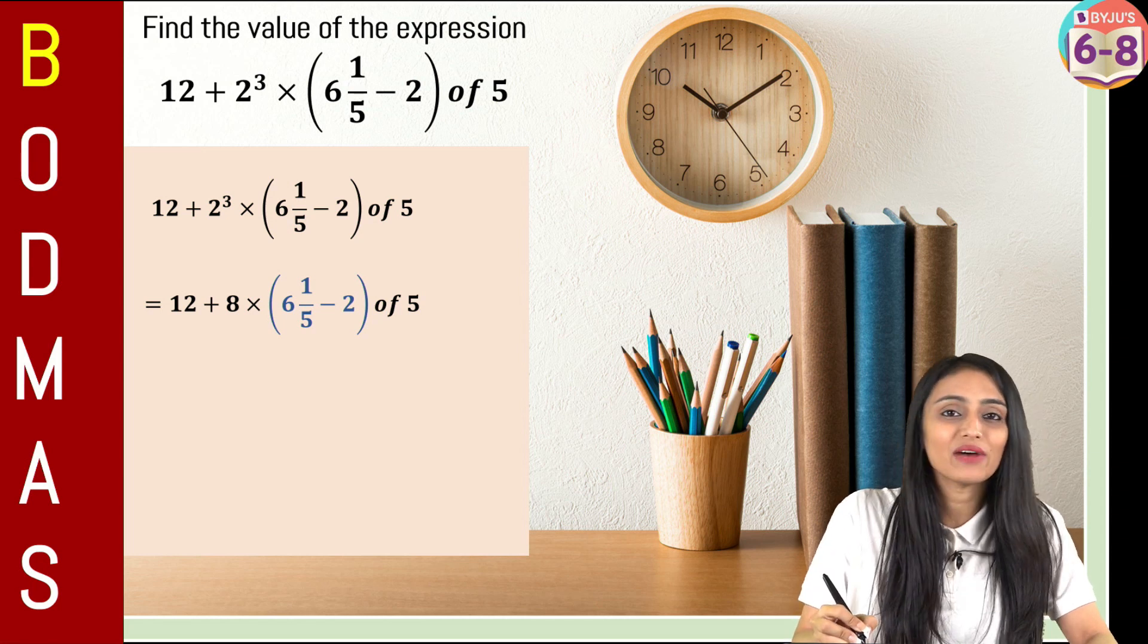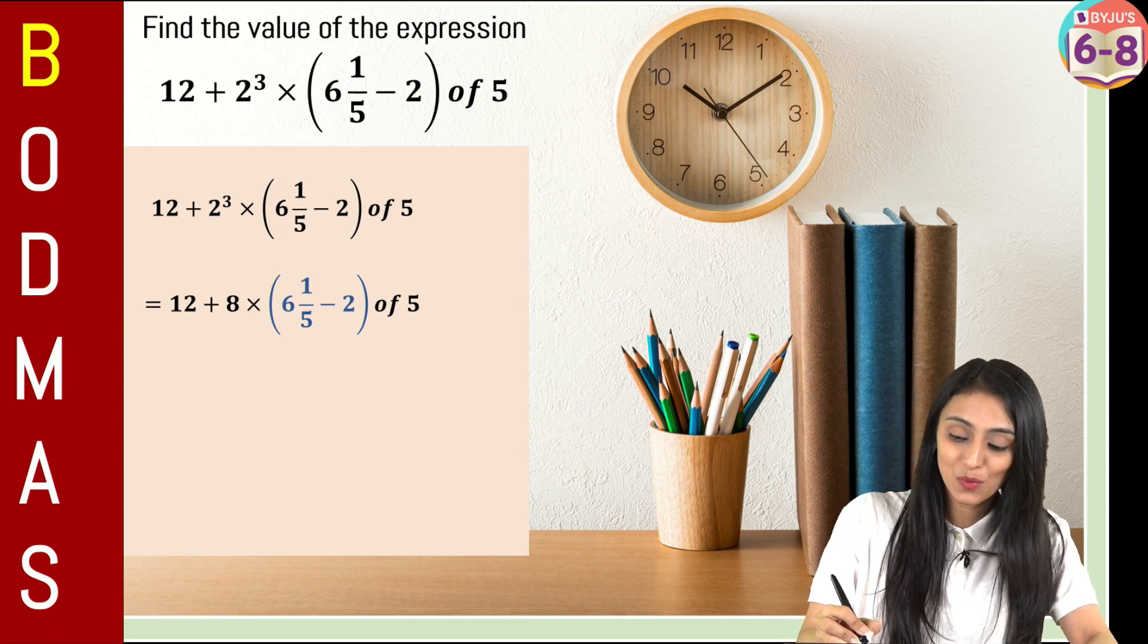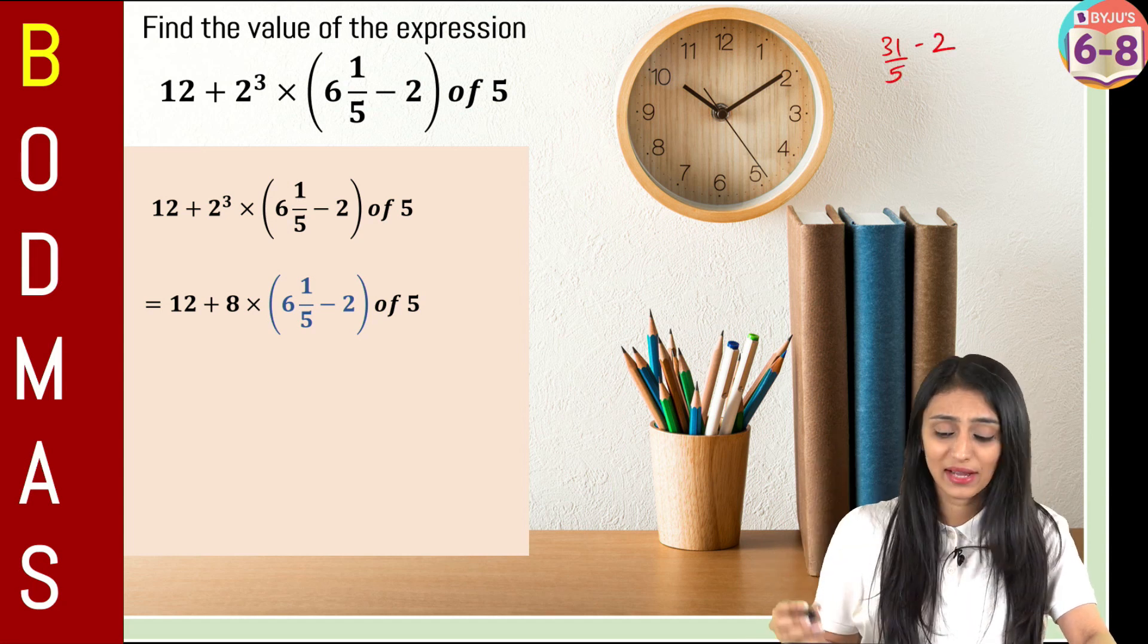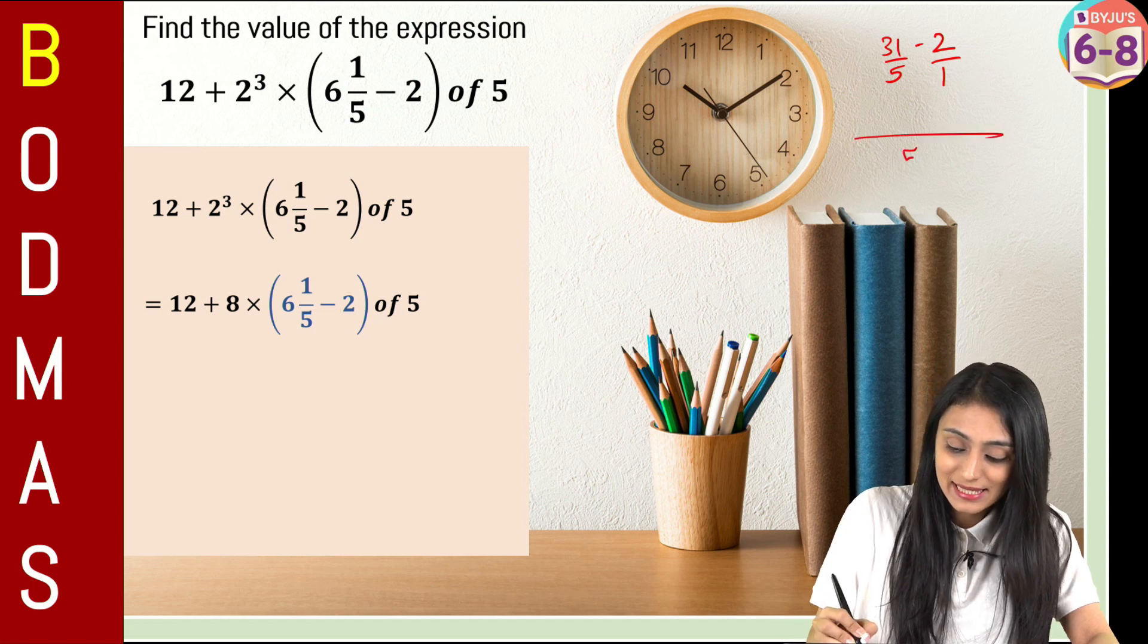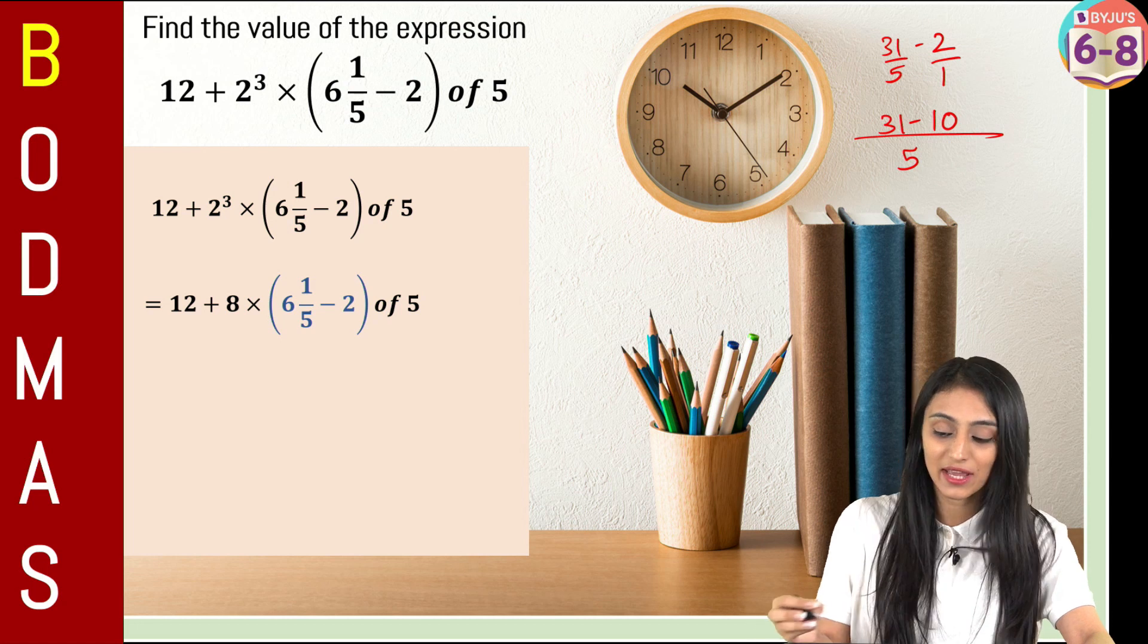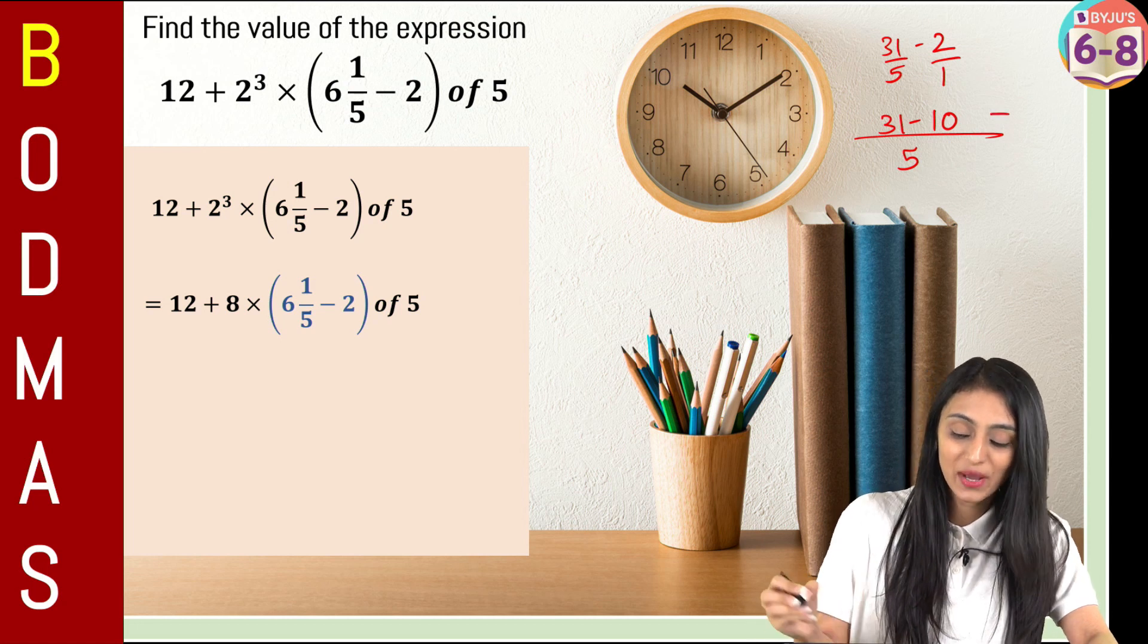If I simplify this here, 5 times 6, that's 30 plus 1 is 31 by 5 minus 2. Now if I simplify this, what I'm going to get? I will just be taking the LCM here. So we have 31 minus 10 upon 5, that's going to be 21 by 5.